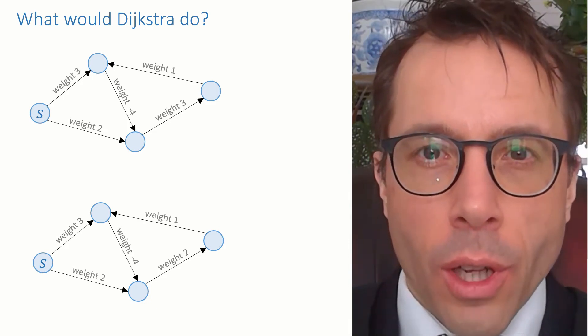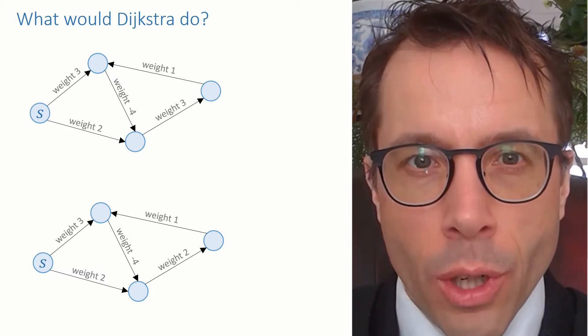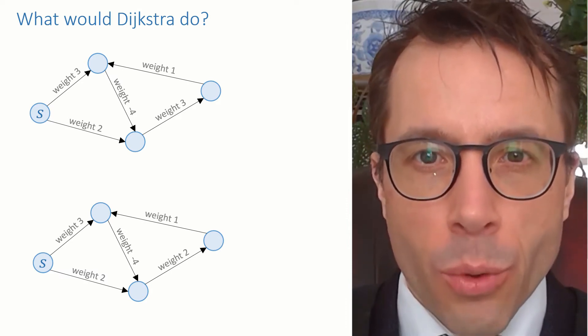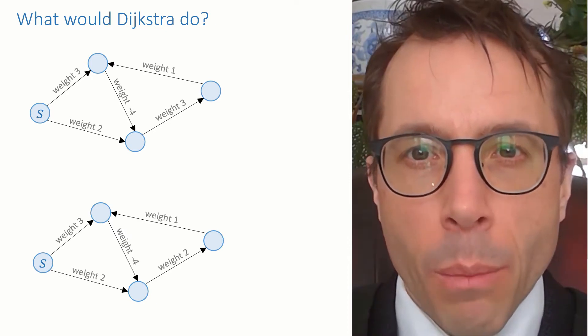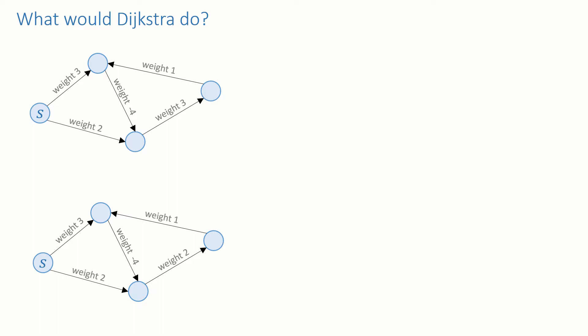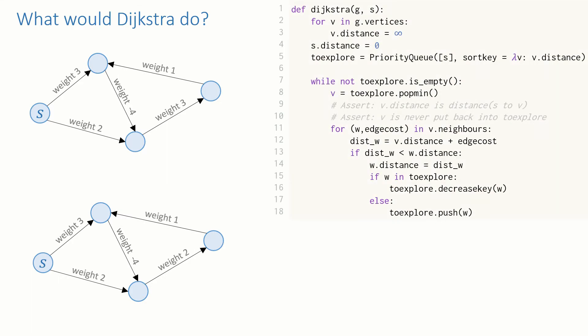Instead of cost, I'll talk about the weight of an edge or the weight of a path. And instead of distance between two vertices, I'll say minimum weight between them. OK, so now pause the video and work through Dijkstra's algorithm on these two graphs. Here's the code for Dijkstra's algorithm in case you don't have it in front of you. Press play again once you've figured out what's going on.